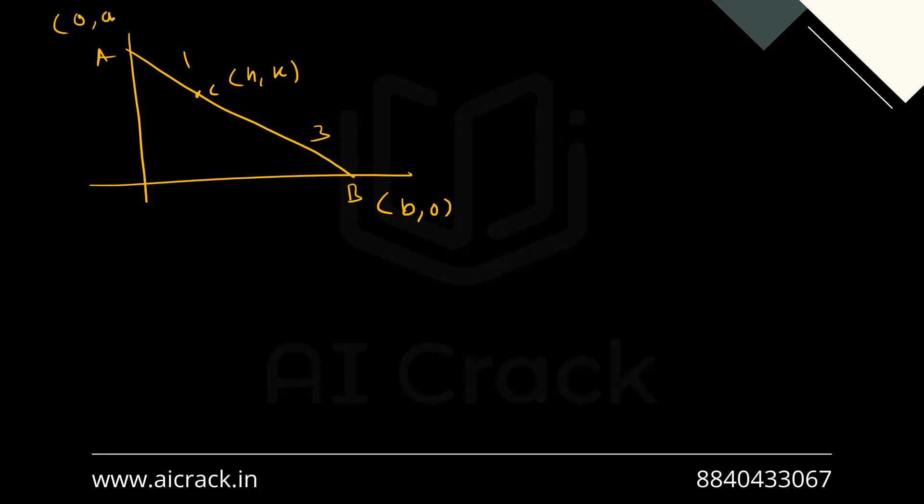Now with the help of section formula I can write down the coordinates of h and k in terms of a and b. So for that, h would be one times b plus three times zero divided by one plus three. That would be b by four. Similarly...